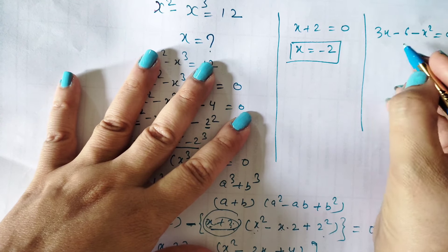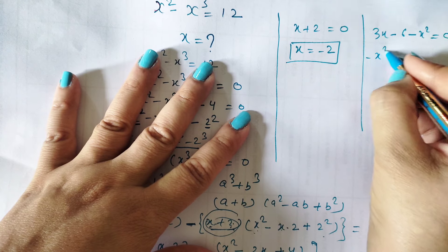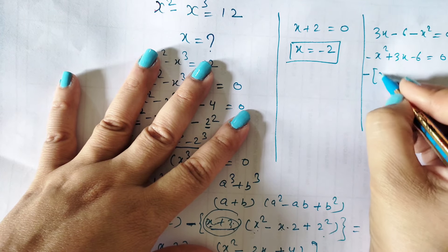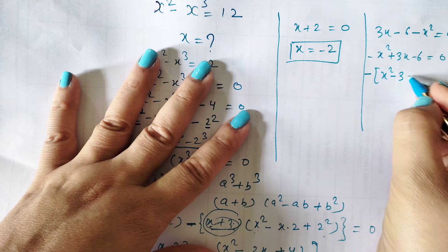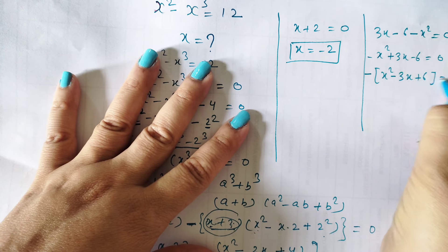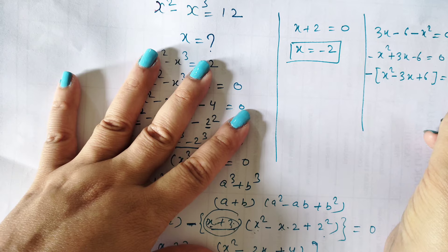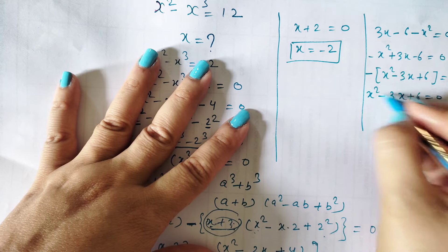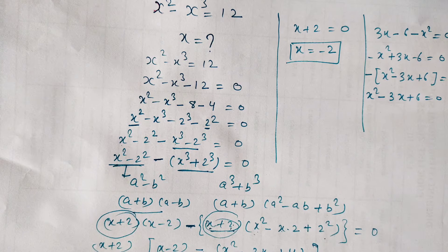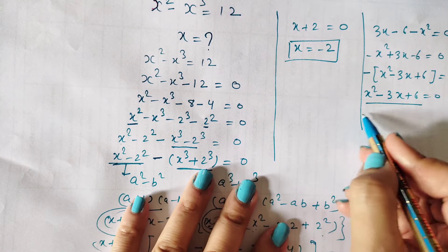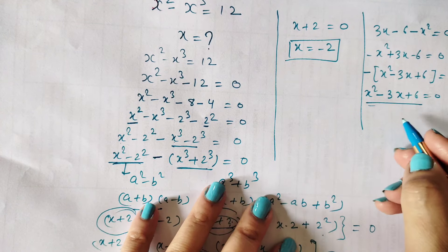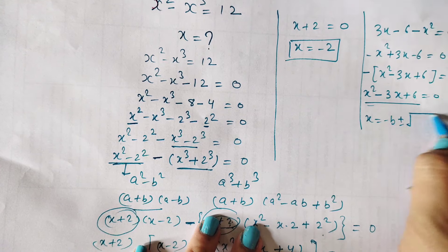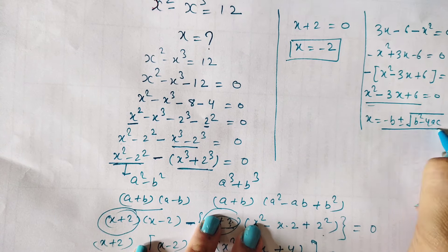We write this in the standard form of a quadratic equation: minus x squared plus 3x minus 6 equals 0. Taking out the minus sign as a common factor, it becomes positive x squared, negative 3x, and positive 6. The minus sign goes to the right hand side, giving zero. So the remaining equation is x squared minus 3x plus 6 equals 0. We solve this using the quadratic formula, which everyone knows from 10th class: x equals minus b plus or minus the square root of b squared minus 4ac, all over 2a.